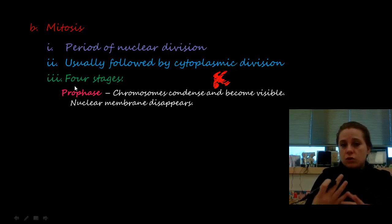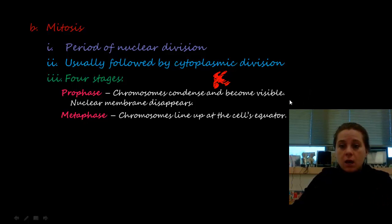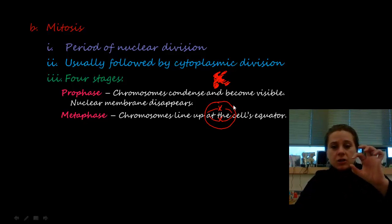Next is metaphase, where the chromosomes line up right at the equator — the middle of the cell. There are tracks called spindle fibers that the chromosomes attach to and run on, so they know which way to go. The chromosomes line right up down the middle of the cell.